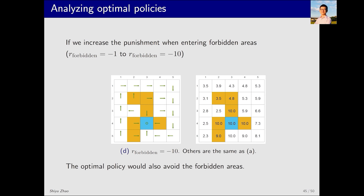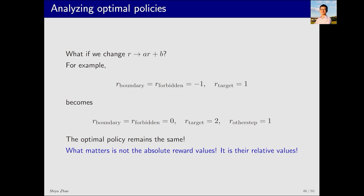Let's examine another scenario where all parameters are the same as scenario A, except for one difference: the penalty for entering forbidden areas increases from negative 1 to negative 10, indicating a more severe punishment. Consequently, the policy naturally changes to avoid the forbidden area by moving around it. Here, gamma is set to 0.9. When reducing gamma to 0.5, the policy still avoids forbidden areas. This example illustrates how changing rewards R or the discount factor gamma can influence the optimal policy.